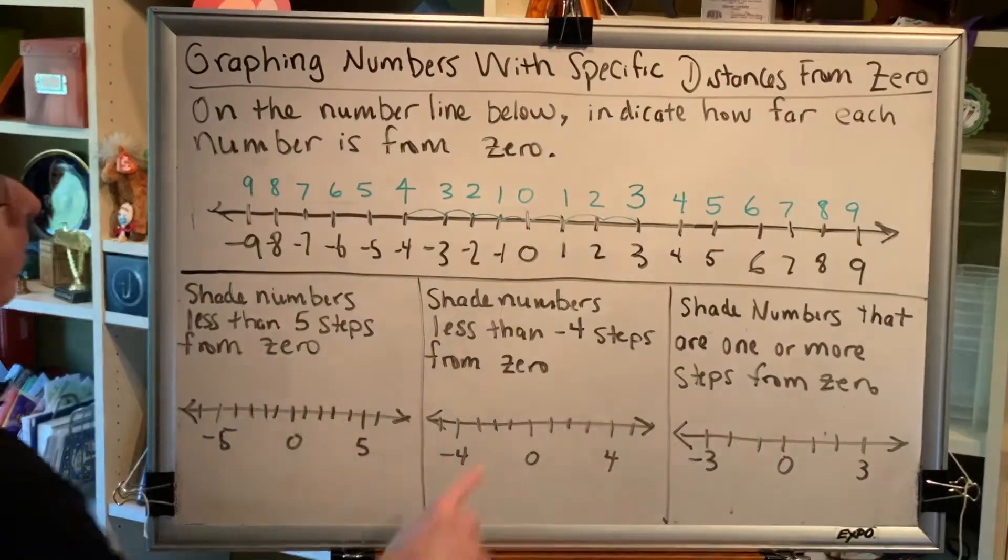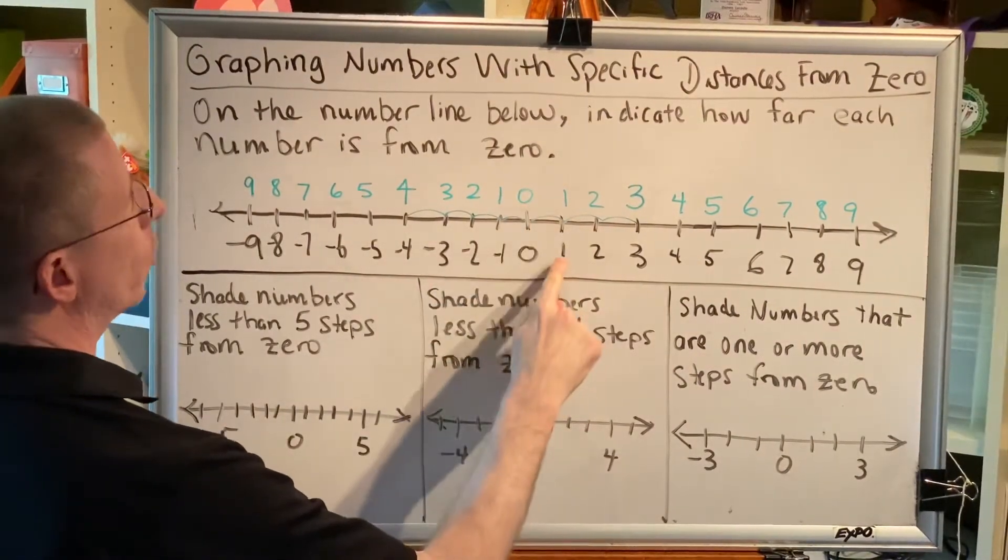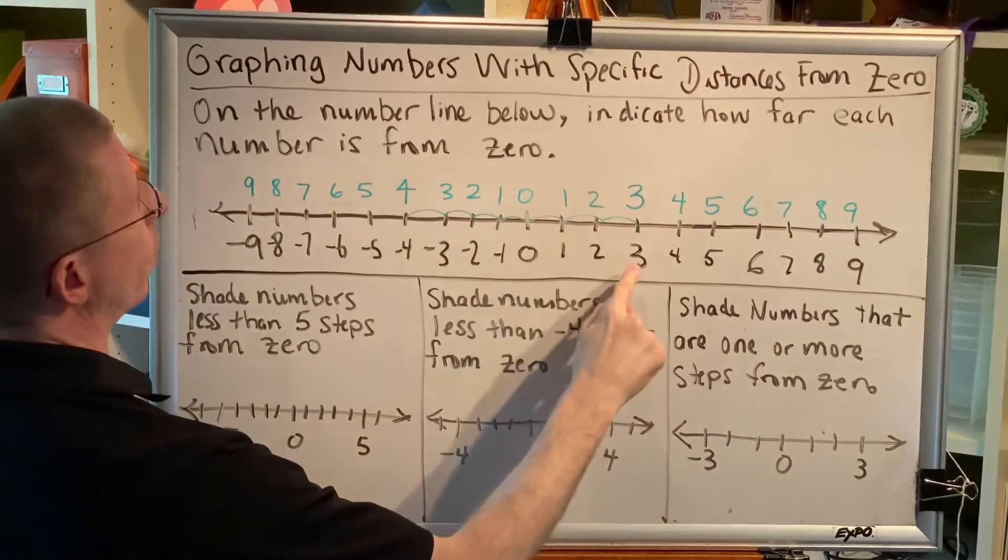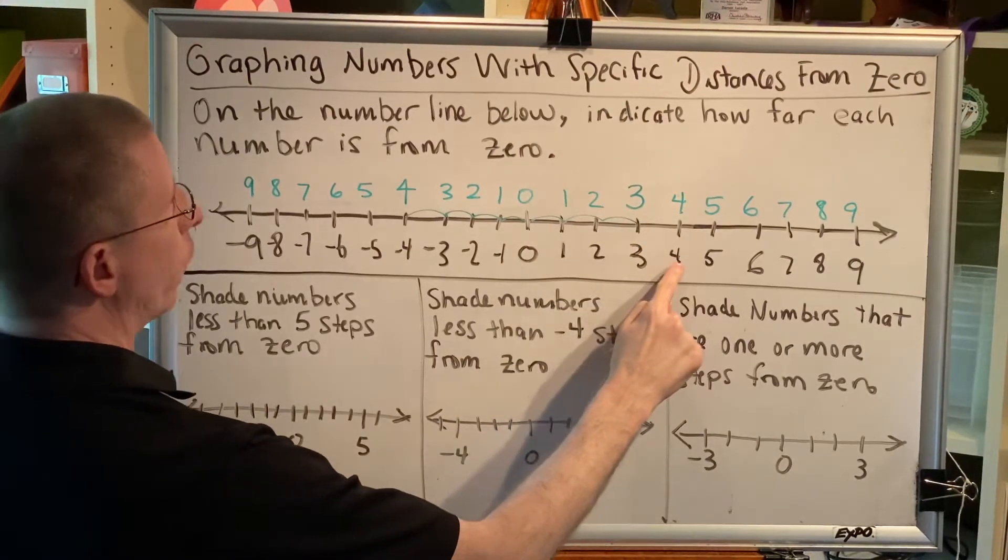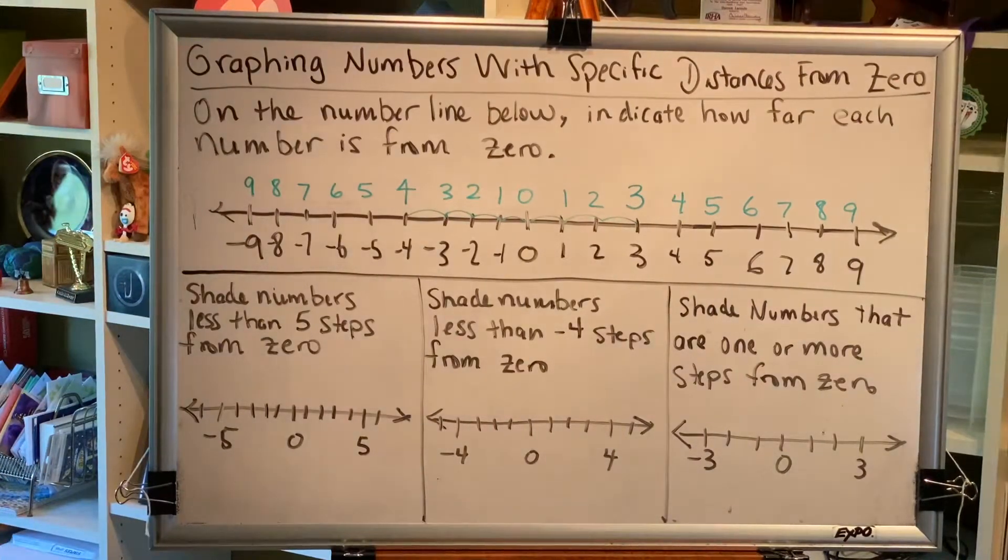Well, that would include zero, which is zero steps from zero, 1 which is 1 step from zero, 2 which is 2 steps from zero, 3 which is 3 steps from zero, and 4 which is 4 steps from zero. But we're not just limited to the integers.